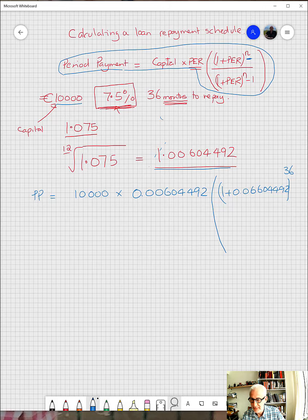That's this N here—36, the number of periods, 36 months to pay. We're going to divide that by the same thing: 1.00604492 to the power of 36, and we'll subtract the one at the very end.